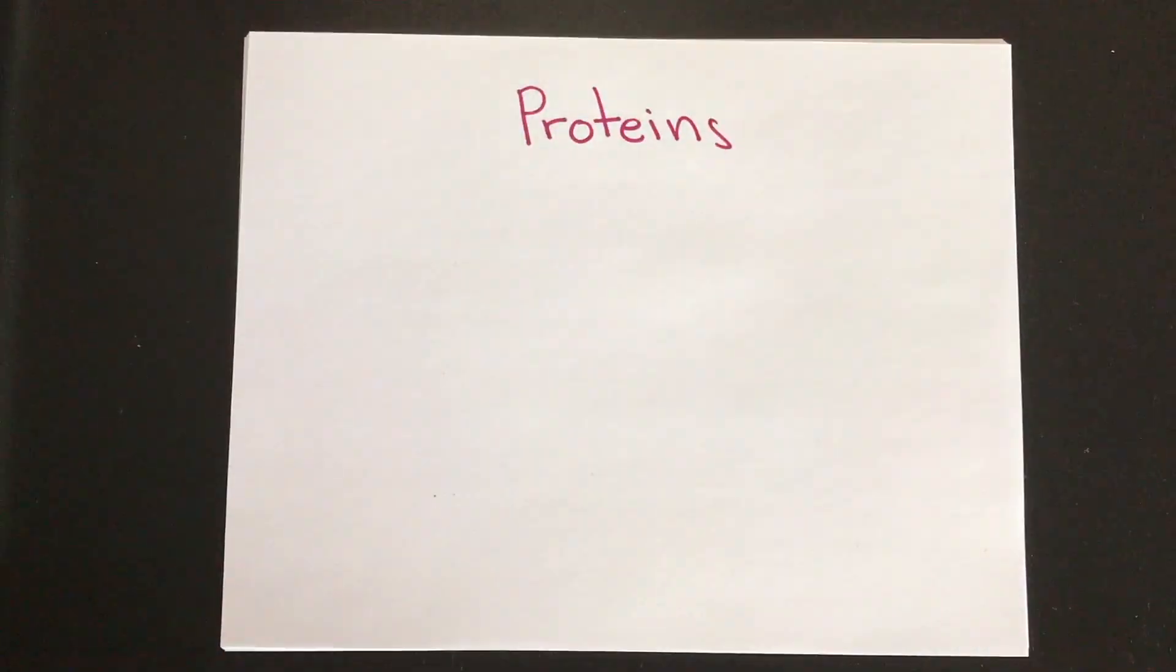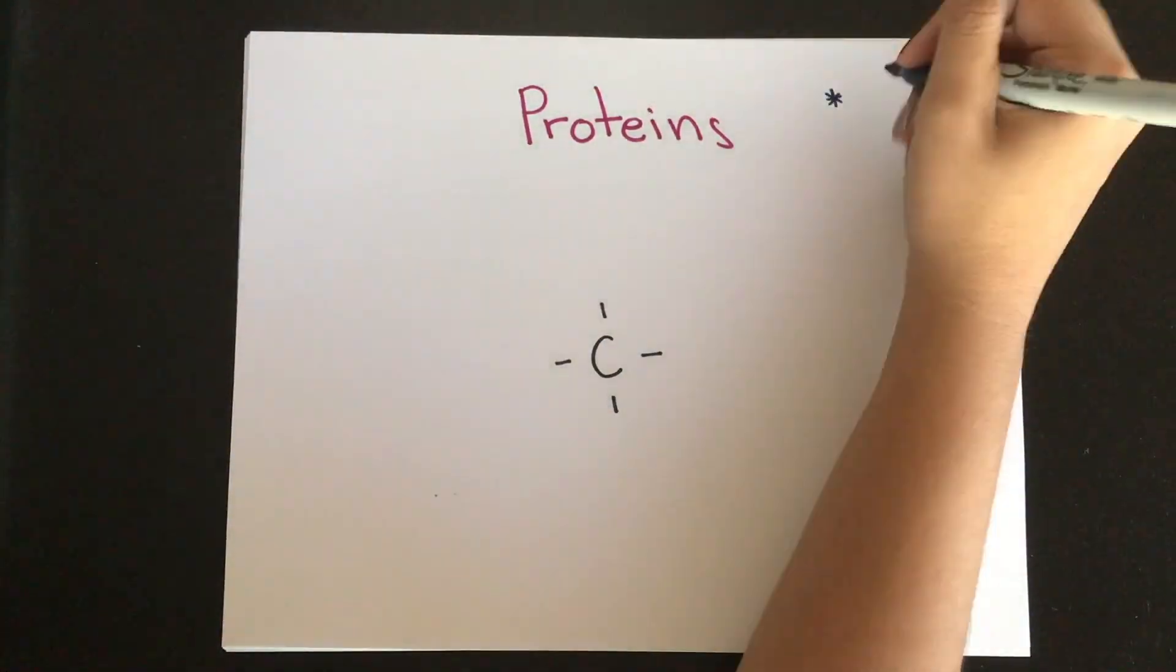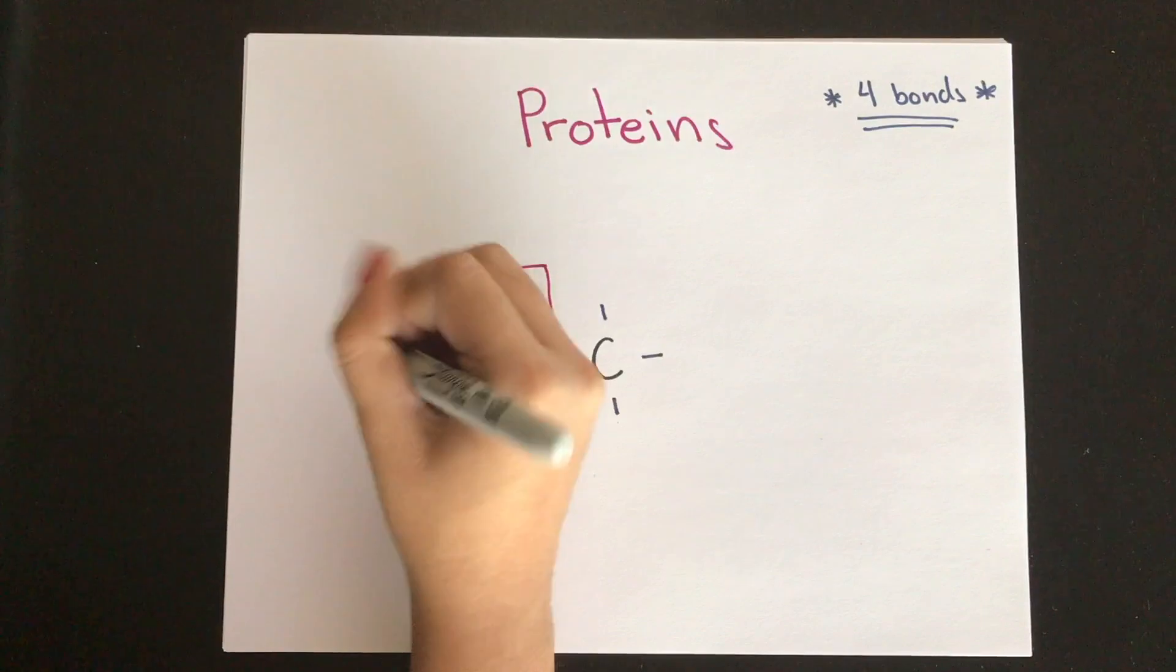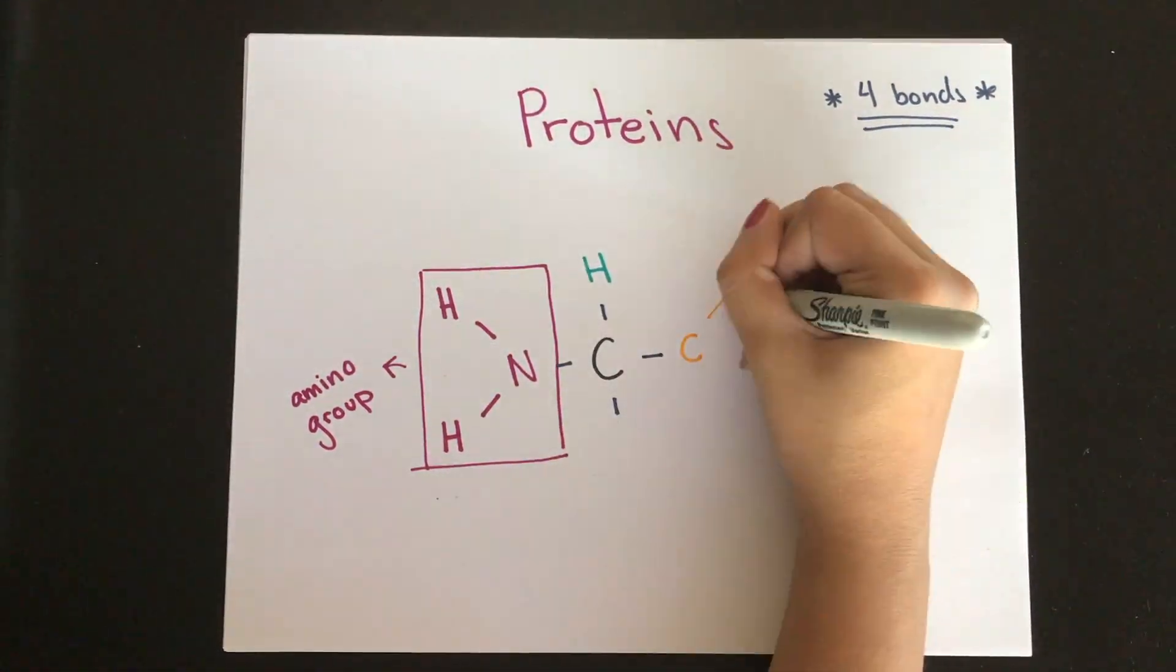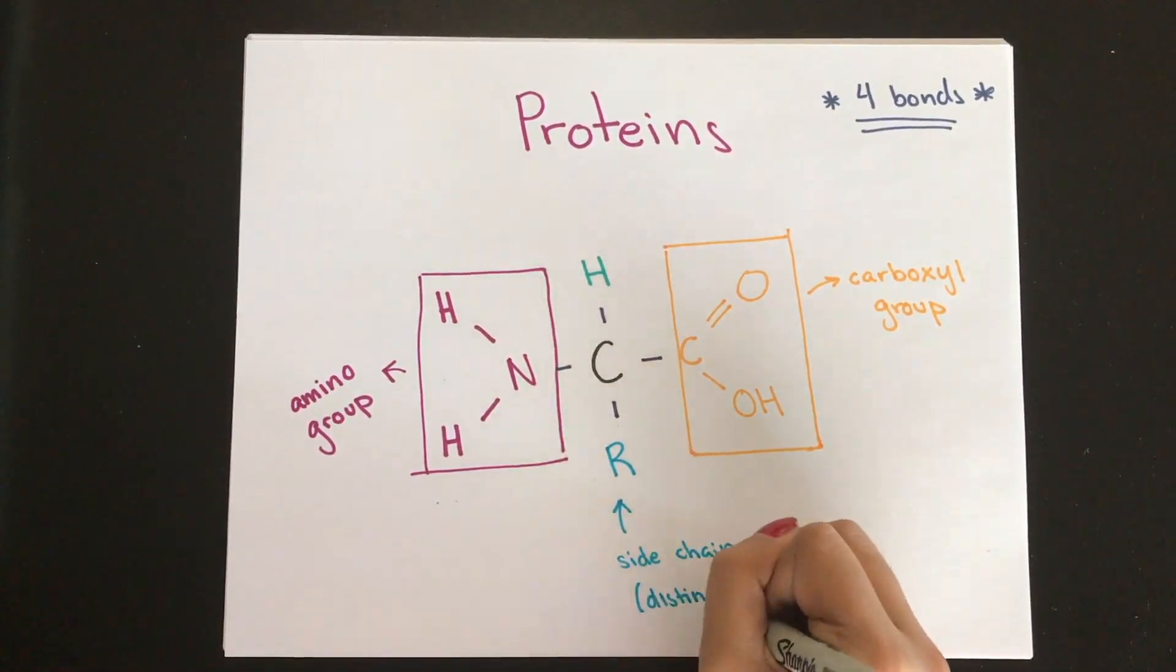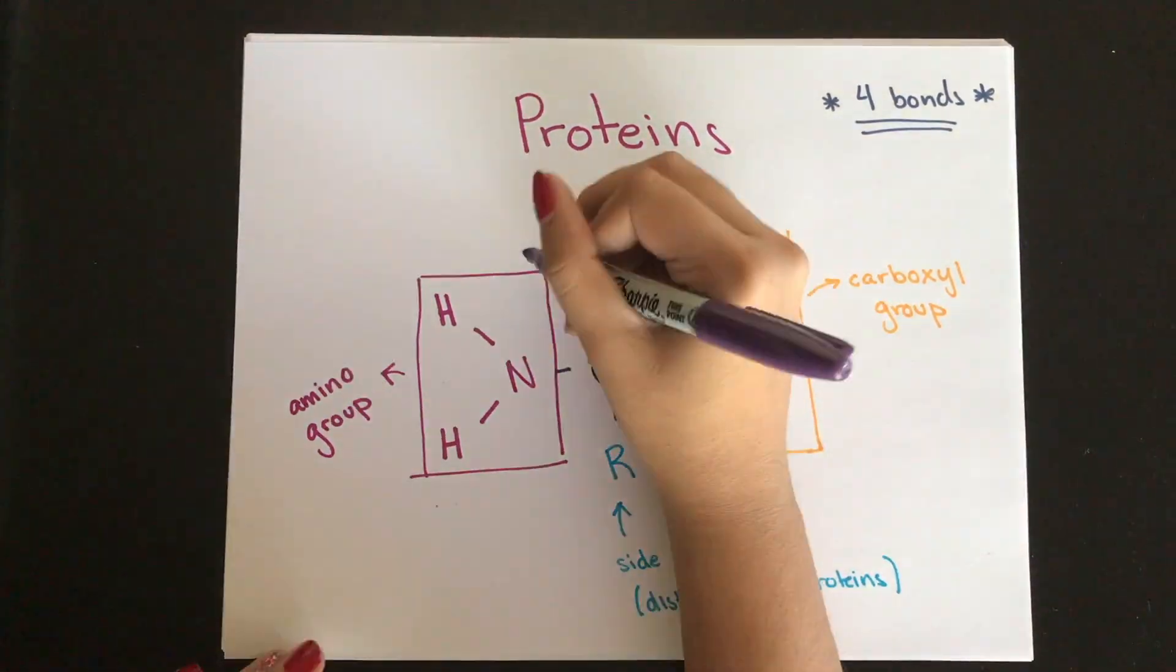We'll begin with proteins. Proteins are polymers made of amino acids. In total, there are 20 types of amino acids, and they all contain a hydrogen, a carboxyl group, an amino group, and an R group. The elements that make up a protein are carbon, hydrogen, oxygen, nitrogen, and sulfur.